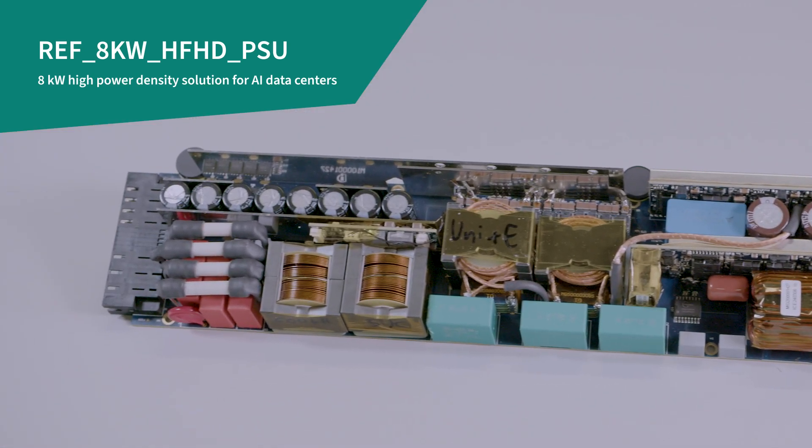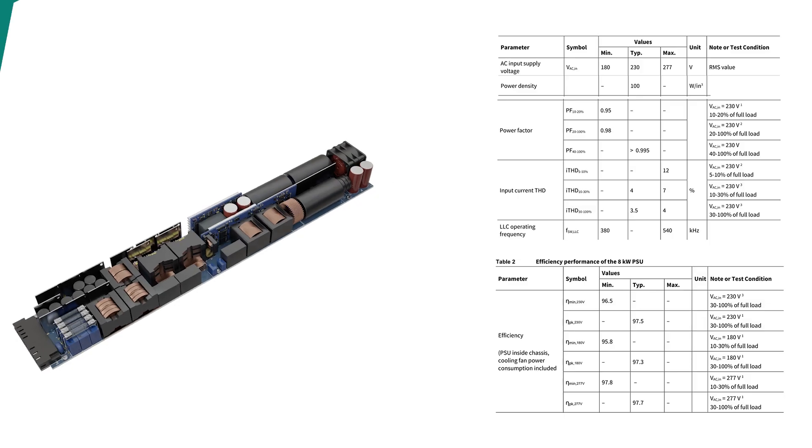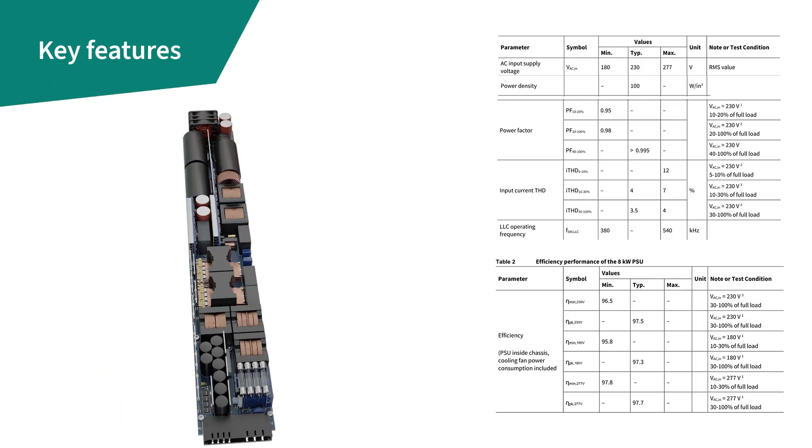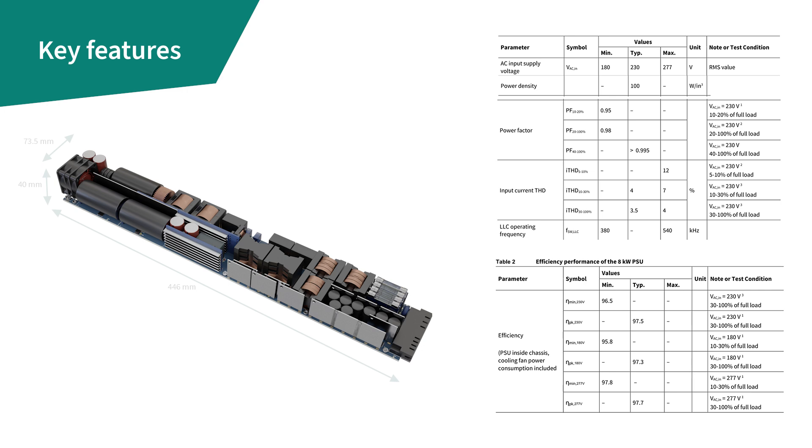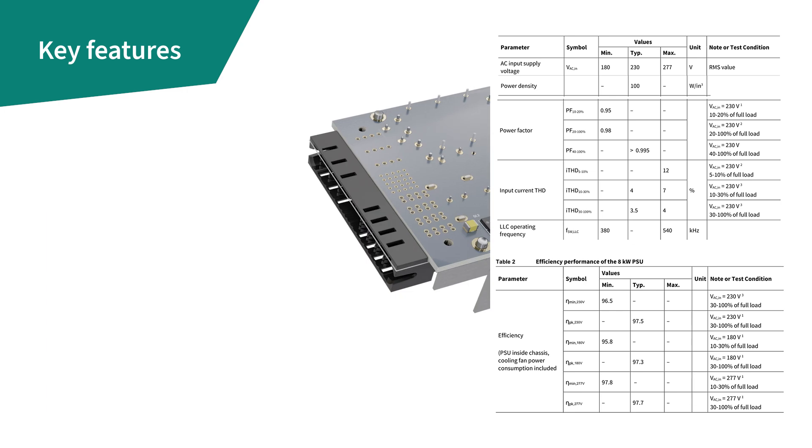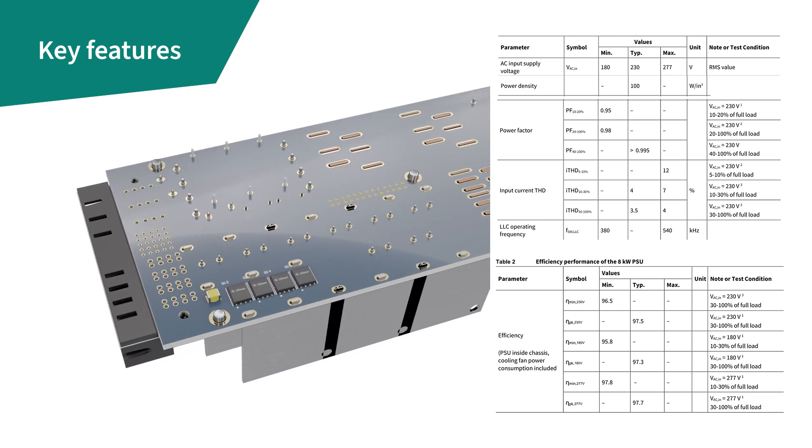The unit is capable of delivering 8 kW output power with dimensions of 40 x 73.5 x 450 mm, resulting in a power density of 100 watts per inch cubed.